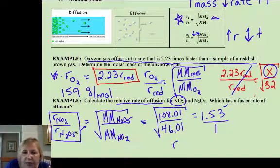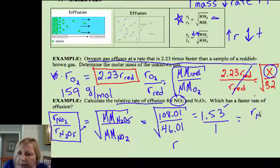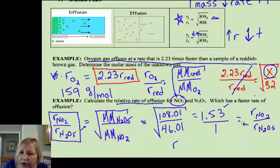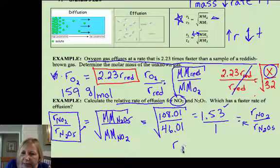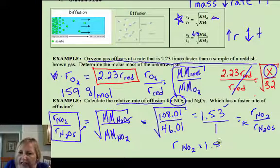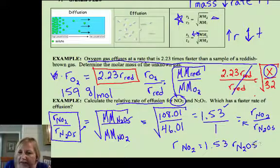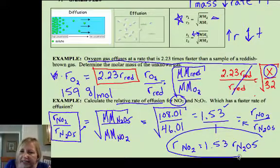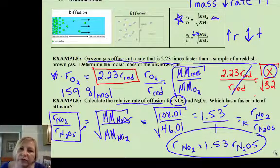Another way to write this would be to multiply. If I cross multiply, right? Let me put that over here. Remember, I have this rate of NO2 over my rate of N2O5. If I simply cross multiplied here, I would get my rate of NO2 is equal to 1.53 times my rate of N2O5. So that would simply be another way to discuss those relative rates.